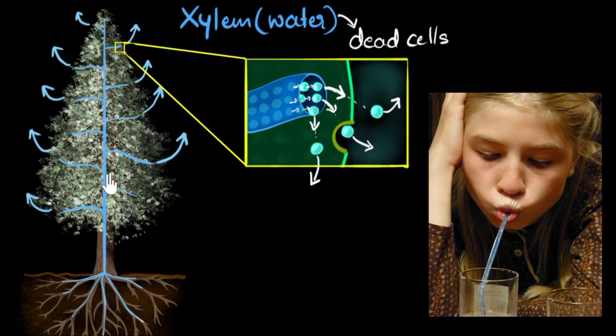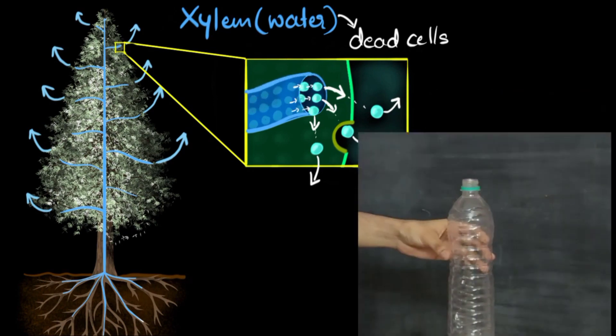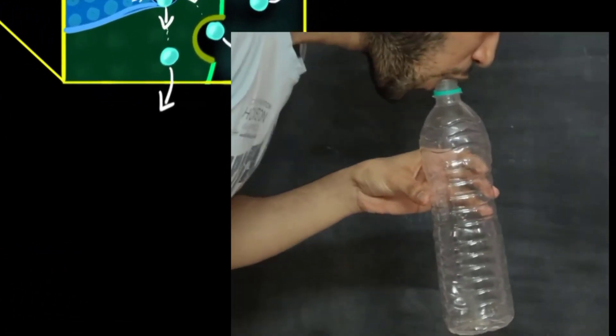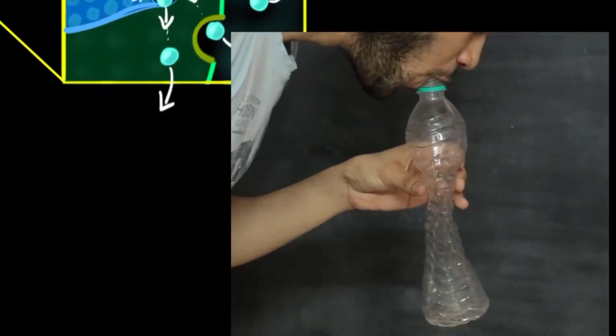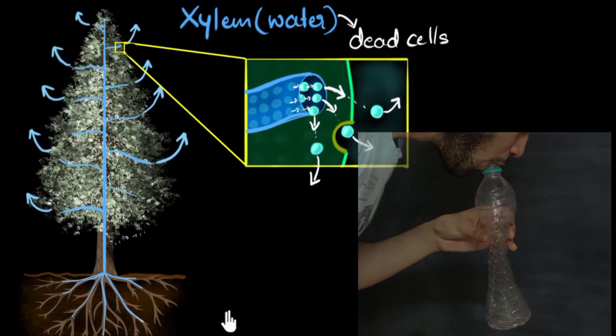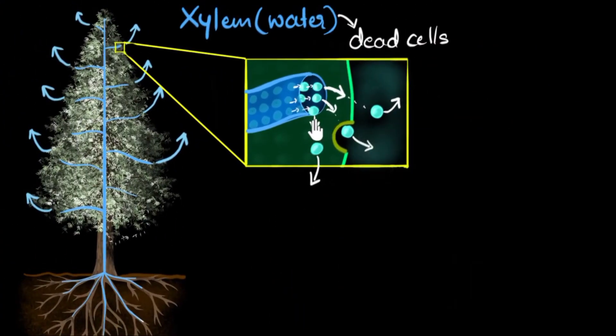And so because there's a lot of suction force within the xylem, the walls of the xylem tissue needs to be super thick, thick enough to withstand that force. Now what do you mean by that? For example, just look at this water bottle. When I start sucking on it, look at how easily the walls collapse. There's a similar suction over here, but way stronger. And so the walls need to be strong enough to not collapse.